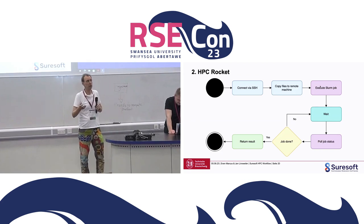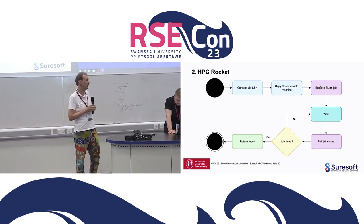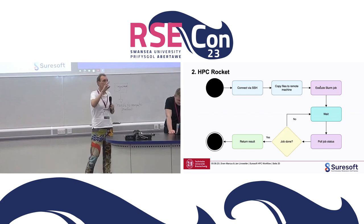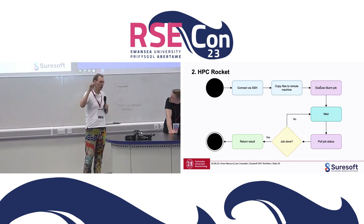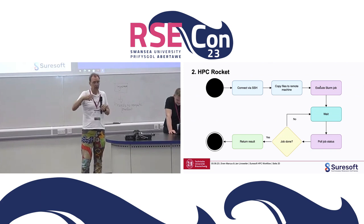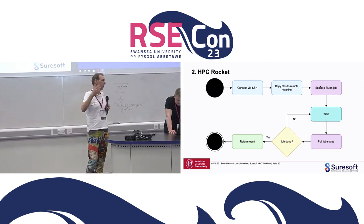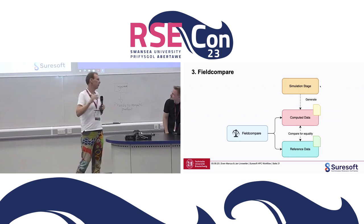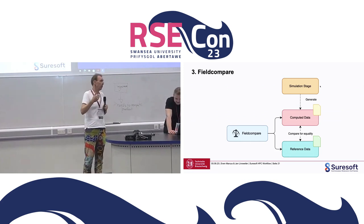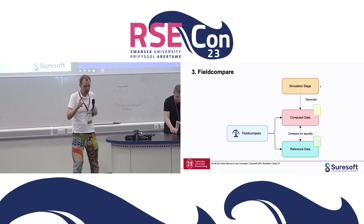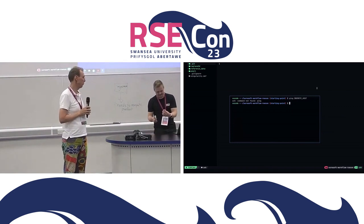HPC Rocket mainly uses SSH, since that's the system you usually find on an HPC cluster. HPC Rocket sits above SSH and copies all the images and files to the HPC system, then schedules the job in the Slurm scheduler, waits until it's executed, and polls the system. In the end, it retrieves your results, runs field compare to compare them, and then displays all your results within the continuous integration pipeline. Without further ado, I now hand over to Sven to walk you through this and show you how it works in action.